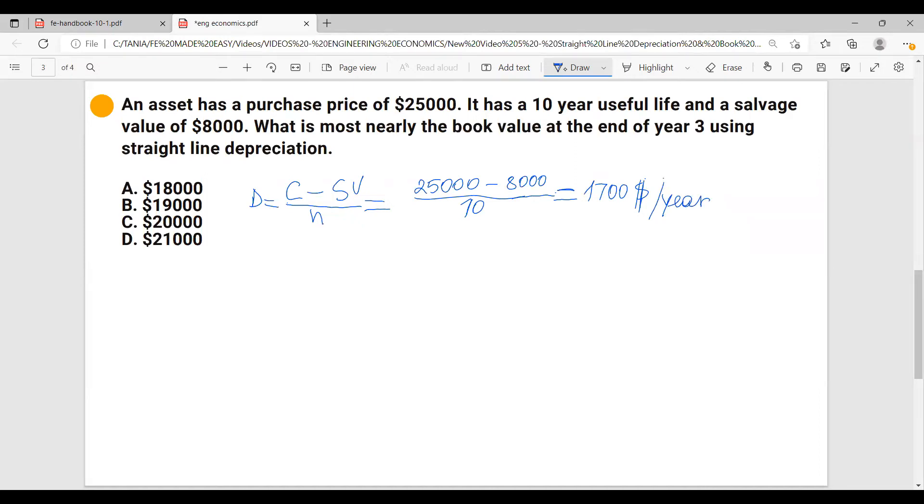And we are asked to calculate the book value at the end of year three using straight line depreciation. So now the book value is going to be equal to initial cost minus sum of depreciation from year one to three. So this will mean we have $25,000 minus $1,700 times three. And this equals $25,000 minus $5,100. And all of this equals to $19,900 book value at the end of year three.